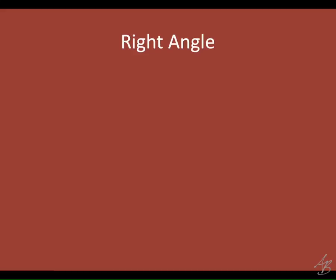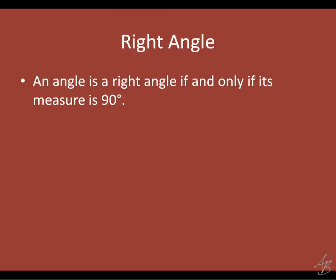We're on the back of the notes now and we'll go through seven more definitions. What's a right angle? An angle that measures 90 degrees. We're not just going to say that though — we need a biconditional. An angle is a right angle if and only if its measure is 90 degrees. This means if I tell you something is a right angle, you know it measures 90 degrees; and if I tell you an angle measures 90 degrees, you know it's a right angle.